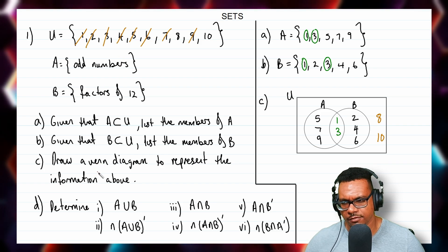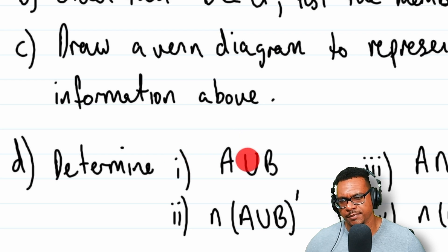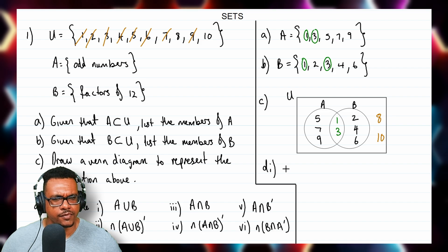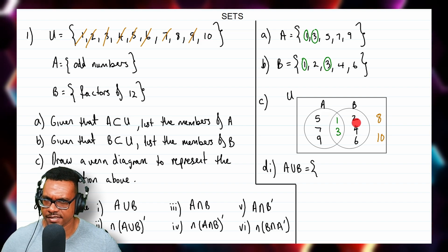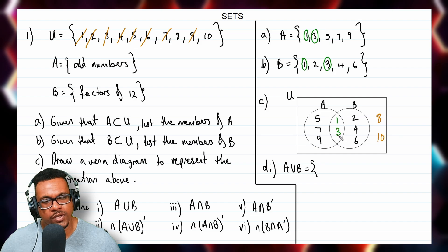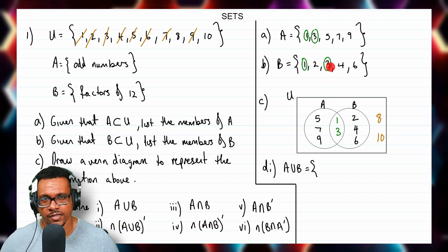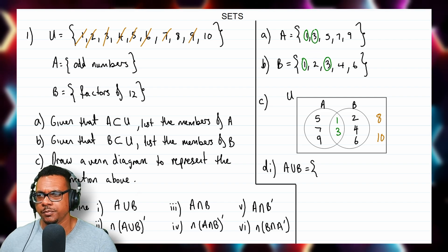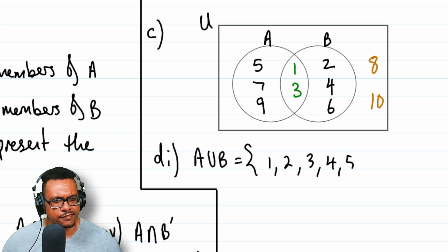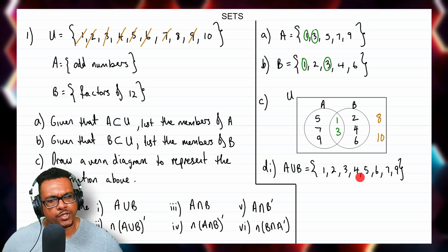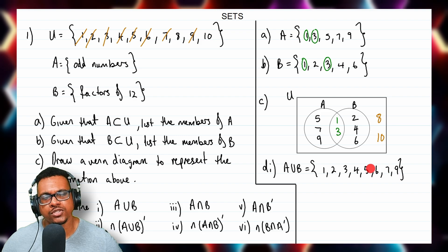After drawing the Venn diagram, for part D part 1 we want A union B — all elements in set A together with all elements in set B. Since A and B have 1 and 3 in common, we don't repeat them. So A union B in ascending order is {1, 2, 3, 4, 5, 6, 7, 9}. There is no 8, but we have a 9.